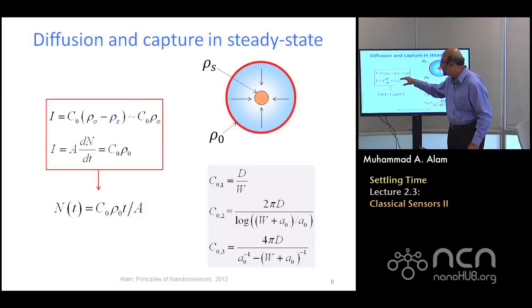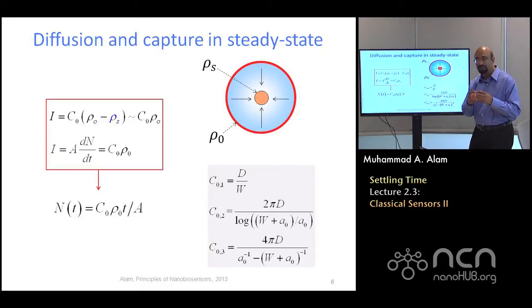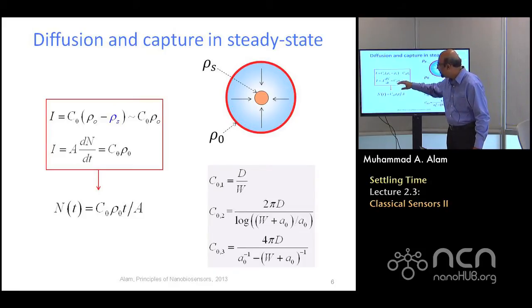And so you can simply integrate the diffusion flux as a function of time. This is the number of molecules captured per unit time is given by capacitance multiplied by rho naught. We are assuming that rho s, the concentration close to the sensor surface, is very small. So we can neglect it. And because it is sort of catching things and removing things from the system very quickly.